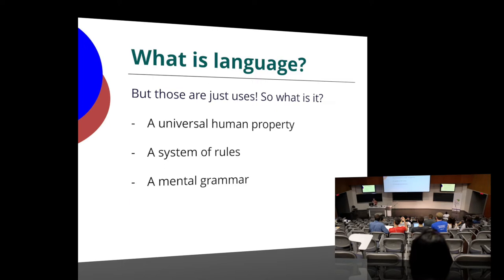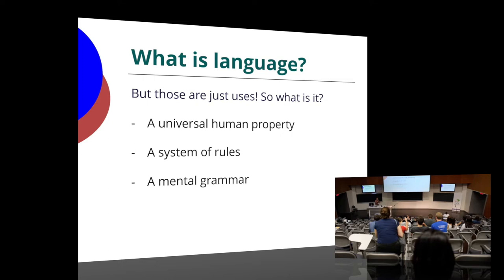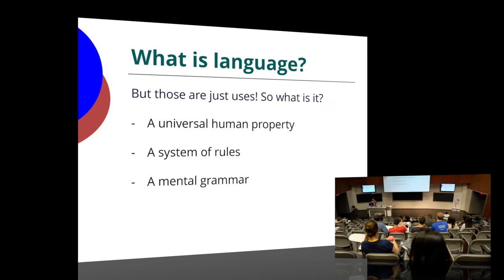Language itself is a universal human property. All kids who are exposed to either spoken or signed language, assuming they are neurologically typical, will pick it up. It's a system of rules that we build into our minds — rules for what we do with our sounds, with our sentences, for what interpretations we can get. These are all the things you're trying to learn when you're learning a language, and you use these to build a mental grammar.